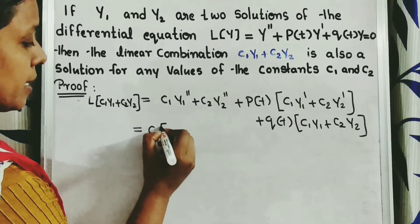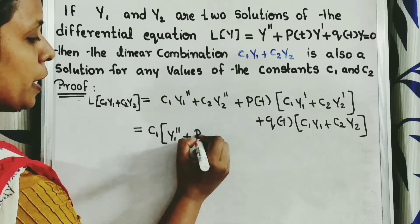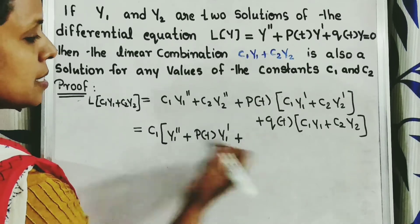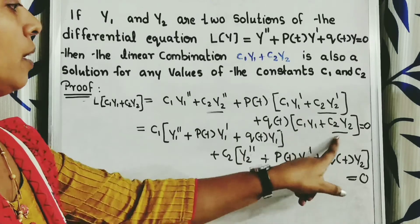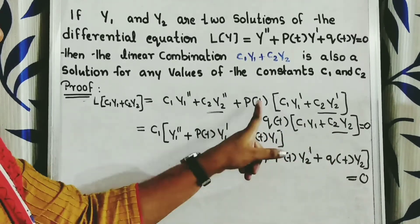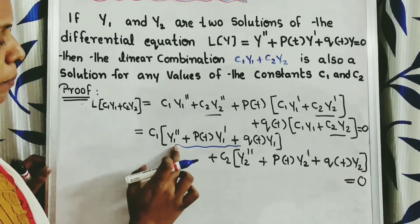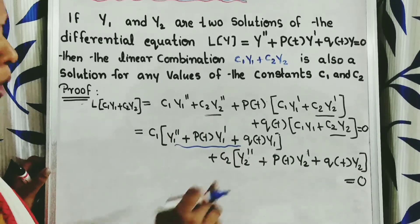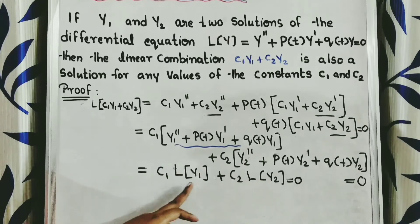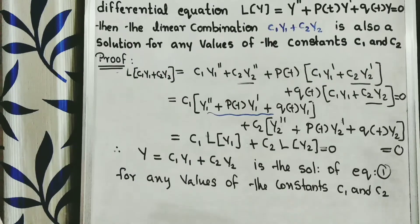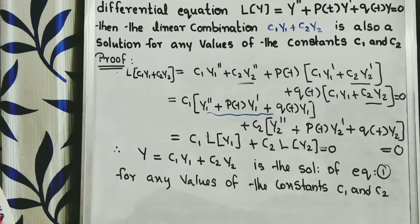Taking c₁ outside, we can write c₁·(y₁'' + p(t)y₁' + q(t)y₁), and taking c₂ outside, we get c₂·(y₂'' + p(t)y₂' + q(t)y₂) = 0. We know that y₁'' + p(t)y₁' + q(t)y₁ = L(y₁), and y₂'' + p(t)y₂' + q(t)y₂ = L(y₂). Substituting, we get c₁·L(y₁) + c₂·L(y₂) = 0. Therefore, y = c₁y₁ + c₂y₂ is a solution of equation 1 for any values of the constants c₁ and c₂.